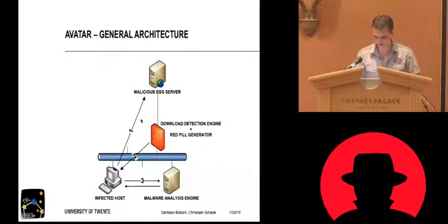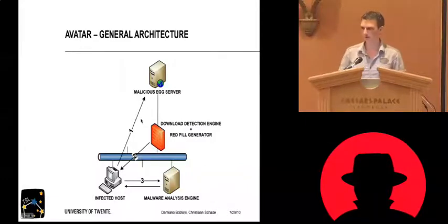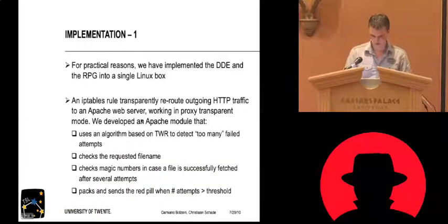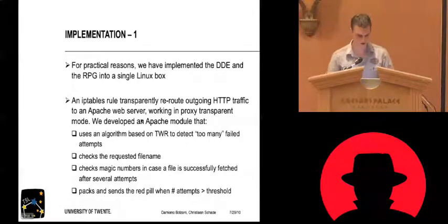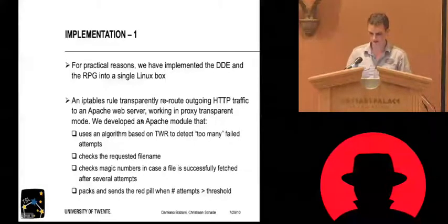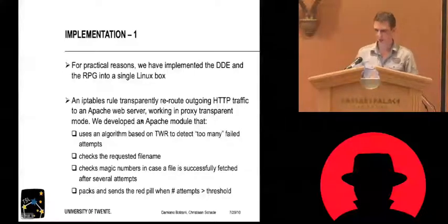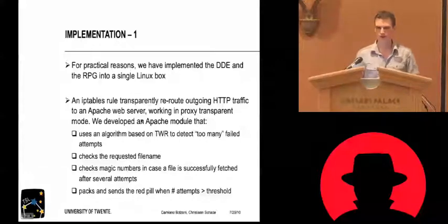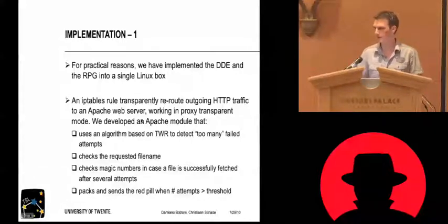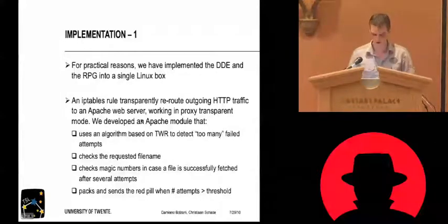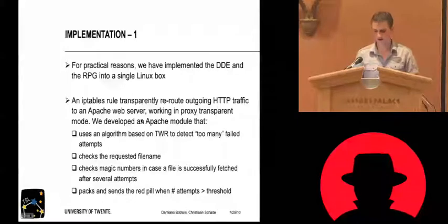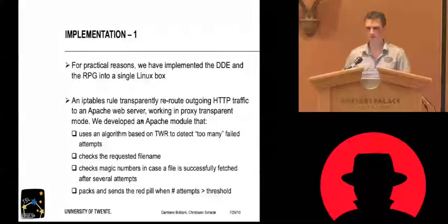The download detection engine and the red pill generator are together on one Linux box, as we'll see in the live demonstration. An IP tables rule reroutes all traffic through an Apache module. This Apache module performs the failed download checking — checking if the number of failed download attempts is higher than a certain threshold. When it is, it notifies the red pill generator, which ships the red pill. This is also where we do the binary checking. Right now we check magic numbers, but malware could bypass this — I'll mention that in the limitations.